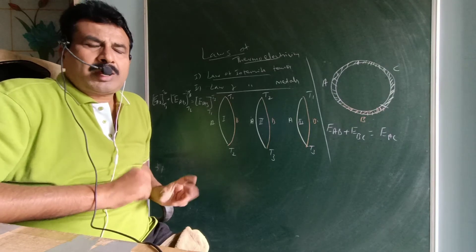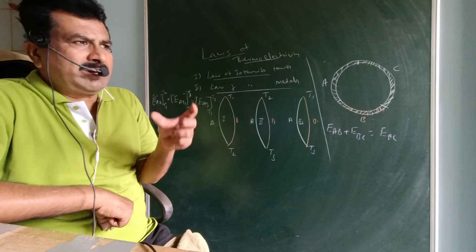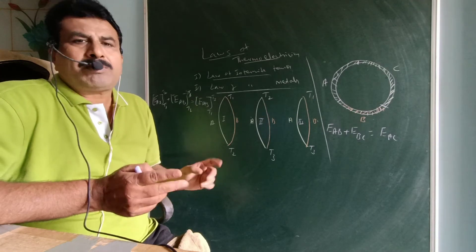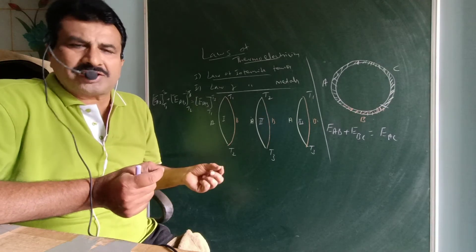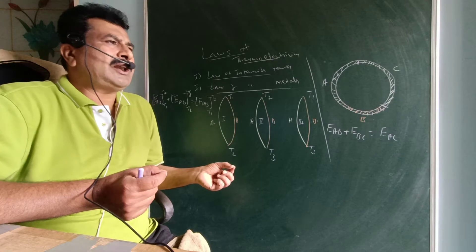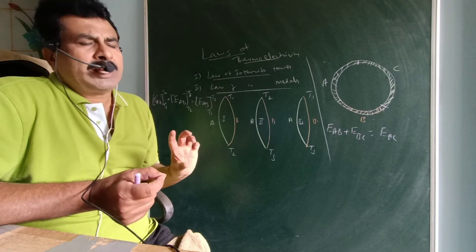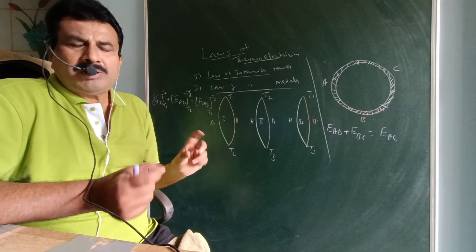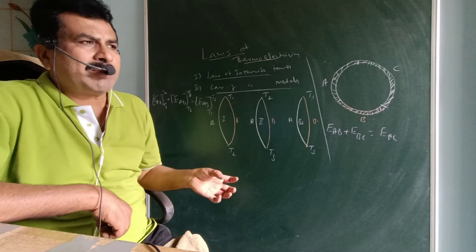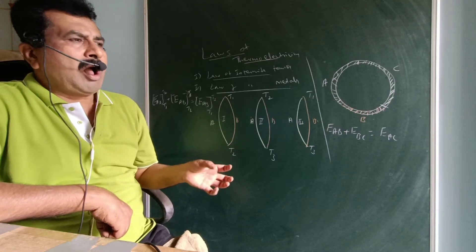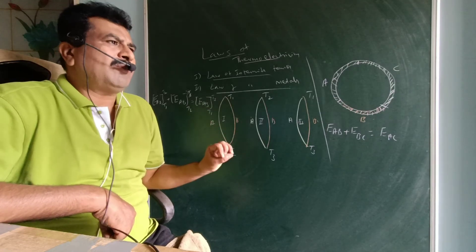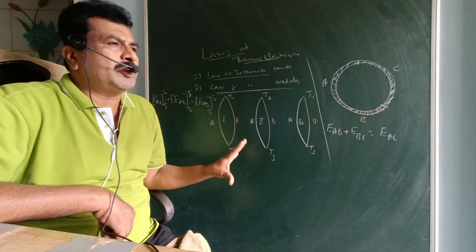A thermocouple consists of dissimilar metals in the form of a loop connected with two junctions. One junction is at a high temperature and the other junction is at a low temperature. This difference in temperature at the junctions maintained in the circuit causes a thermo EMF and thermoelectric current to be produced.